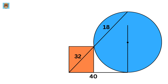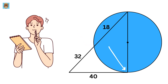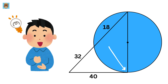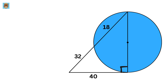Let us draw this line which connects all these three collinear points. Now consider this triangle. What will be the value of this angle? It will be a right angle because this will be a diameter as it passes through the center of the circle, and we know that the diameter is always perpendicular to the tangent line.